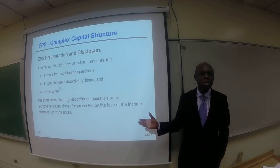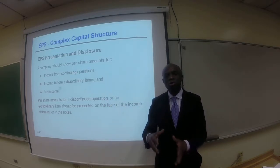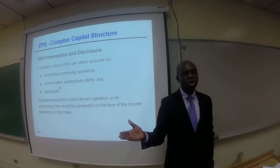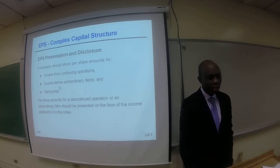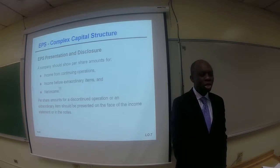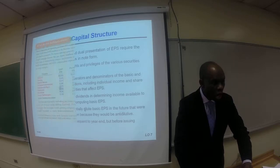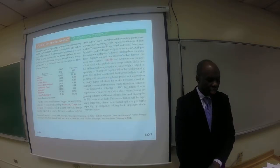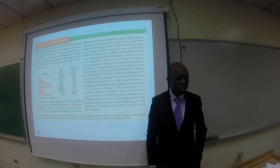EPS presentation and disclosure: companies should disclose per-share amounts. The pertinent items to disclose as part of notes to the financial statements include income from continuing operations, income before extraordinary items, and net income. You have to compute EPS for each segment as discussed. Per-share amounts for discontinued operations or extraordinary items should be presented on the face of the income statement or in the notes to the financial statements. That would do it for chapter 16, dilutive securities and earnings per share. Thank you.